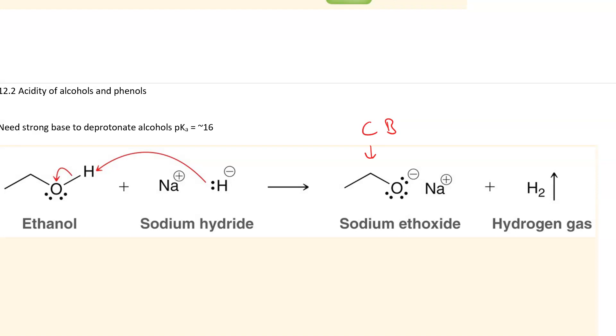The ethoxide is the conjugate base of the alcohol. And then the hydride, once it's protonated, well, you've got hydrogen gas.